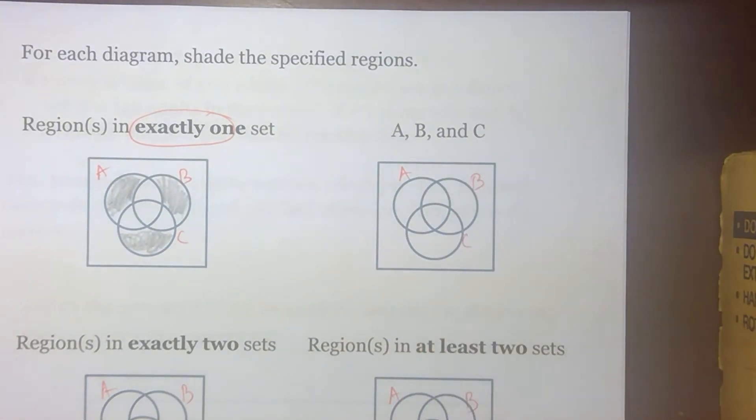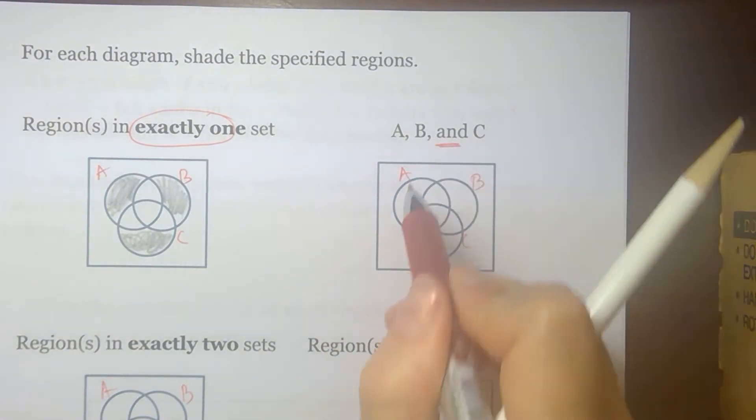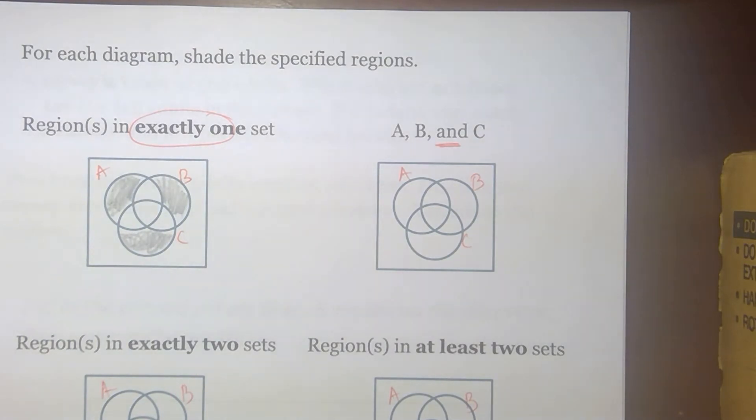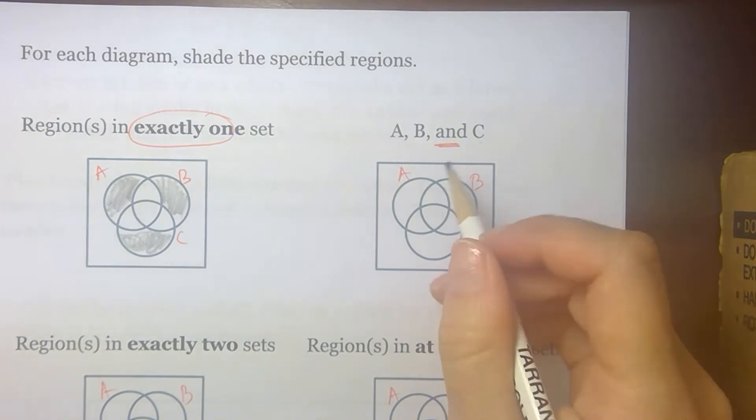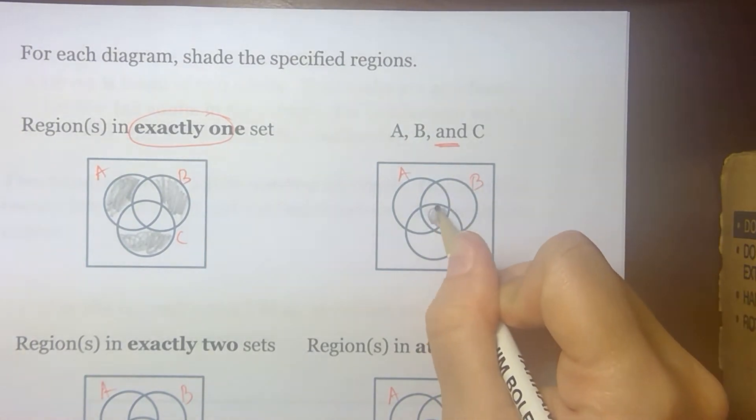A, B, and C implies intersection. Remember that keyword is and. So I'm looking for the regions that are a part of all three loops. And that is just that interior region five.